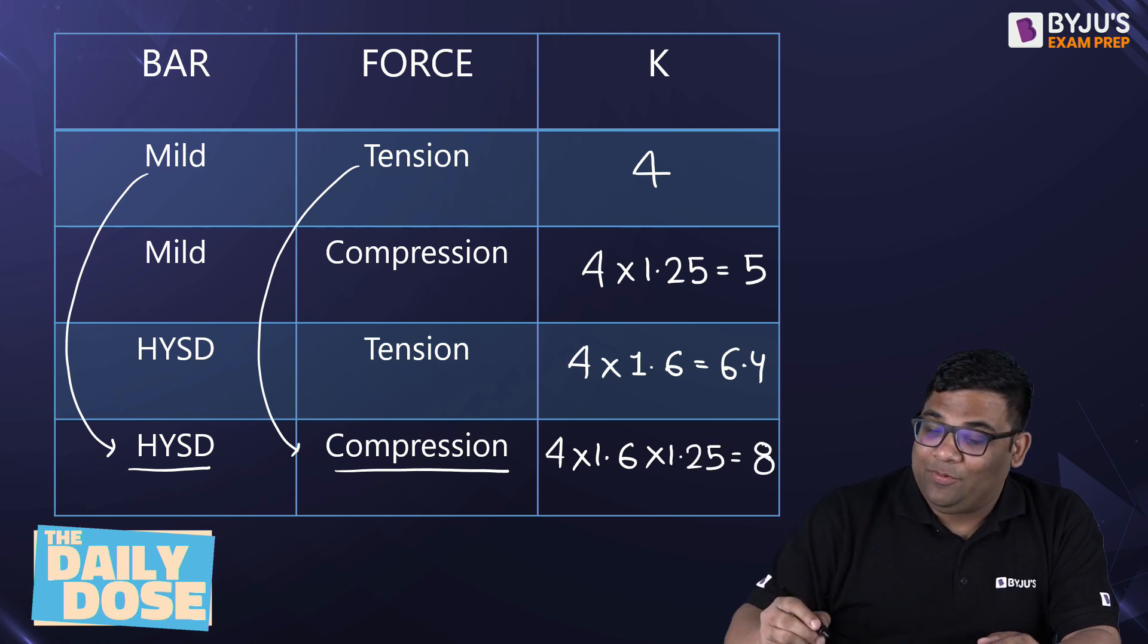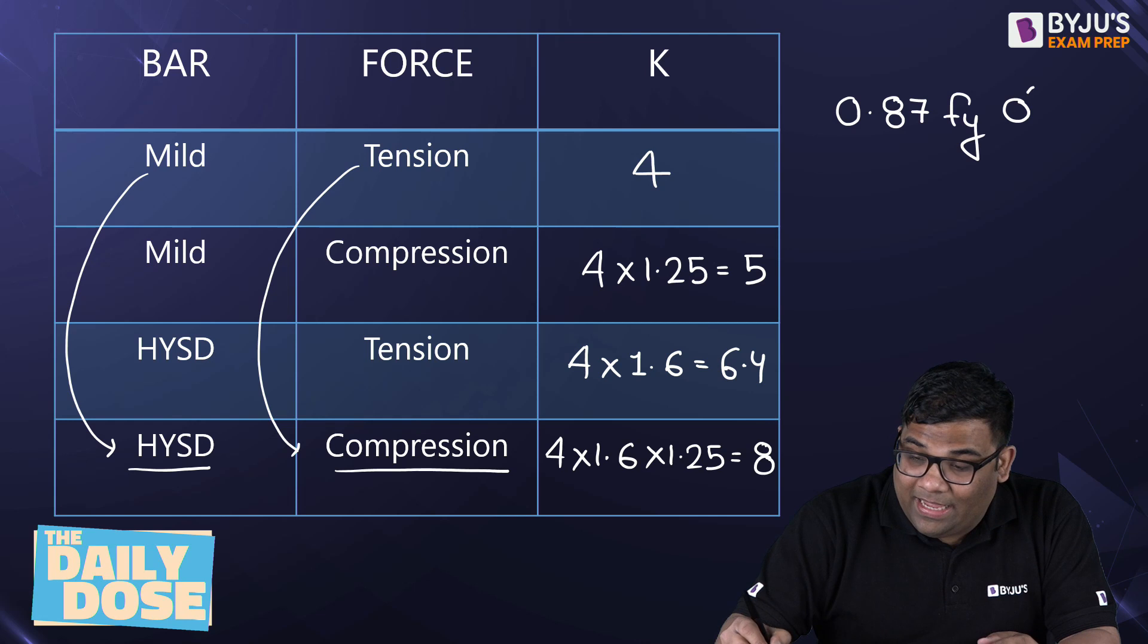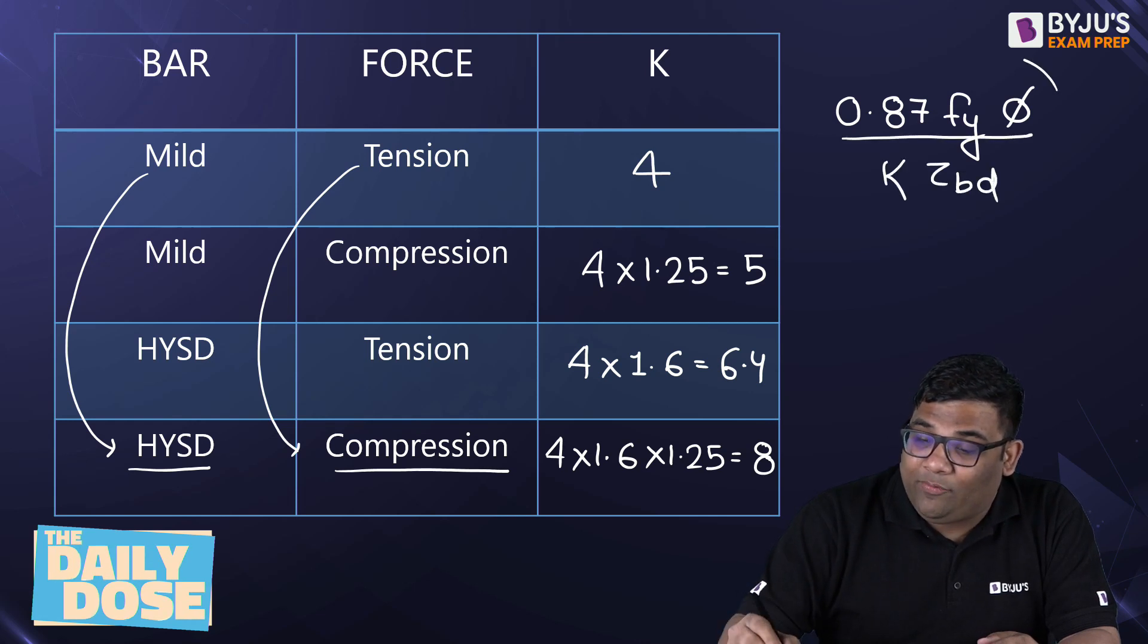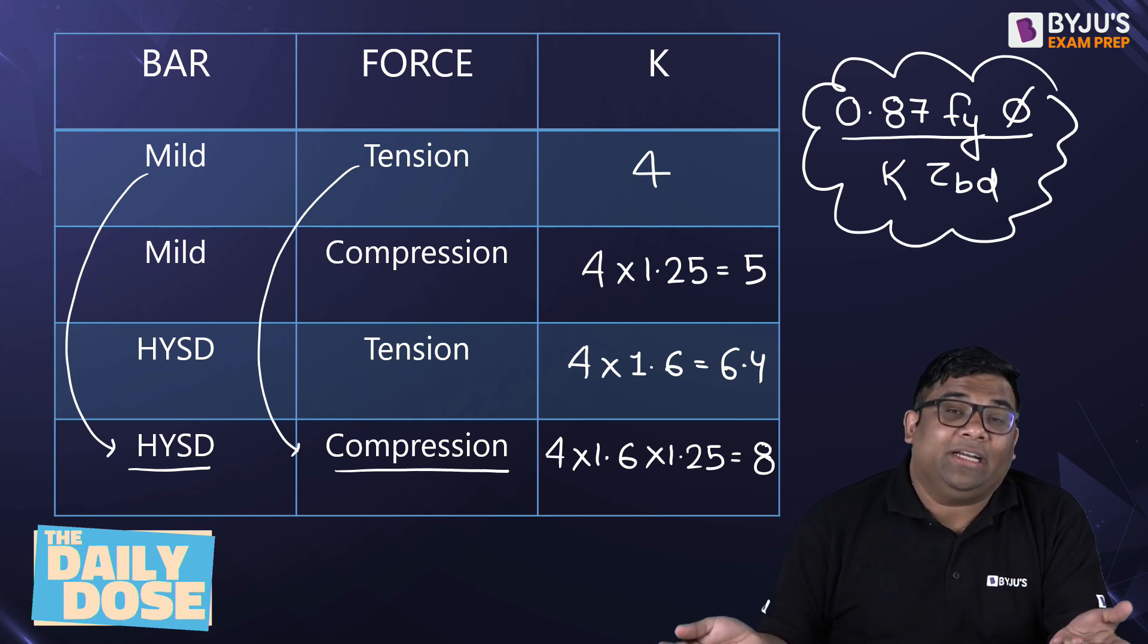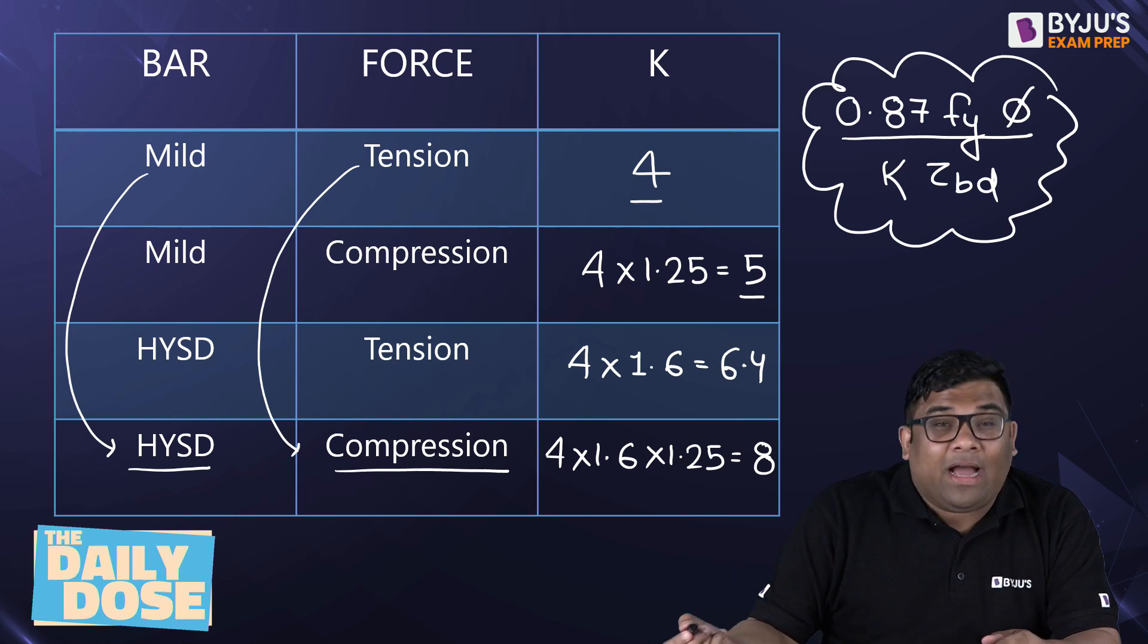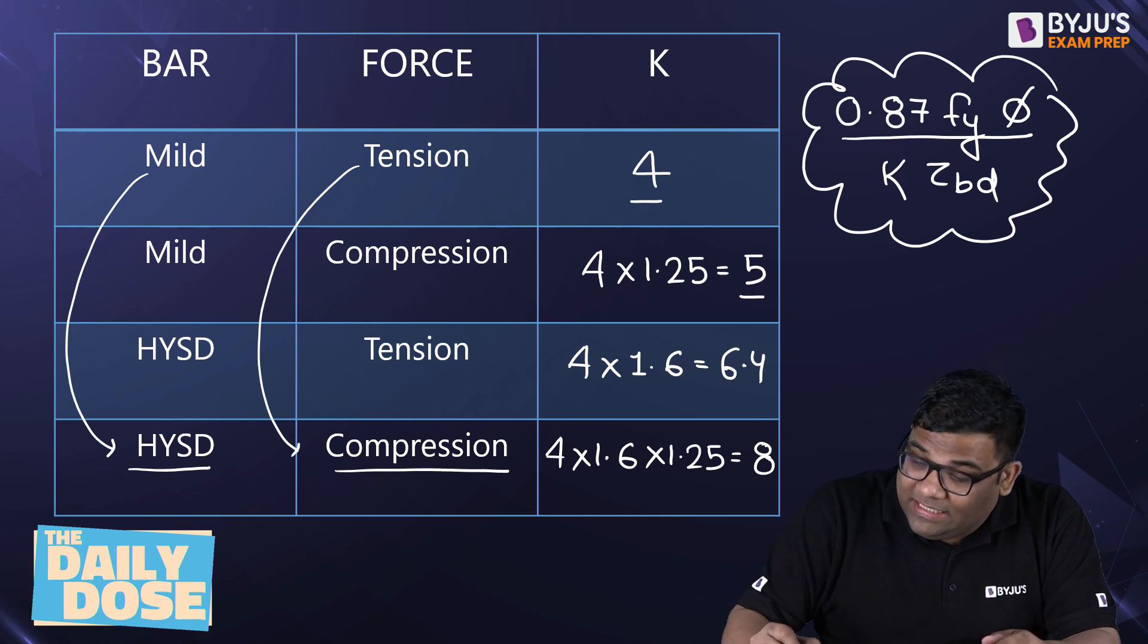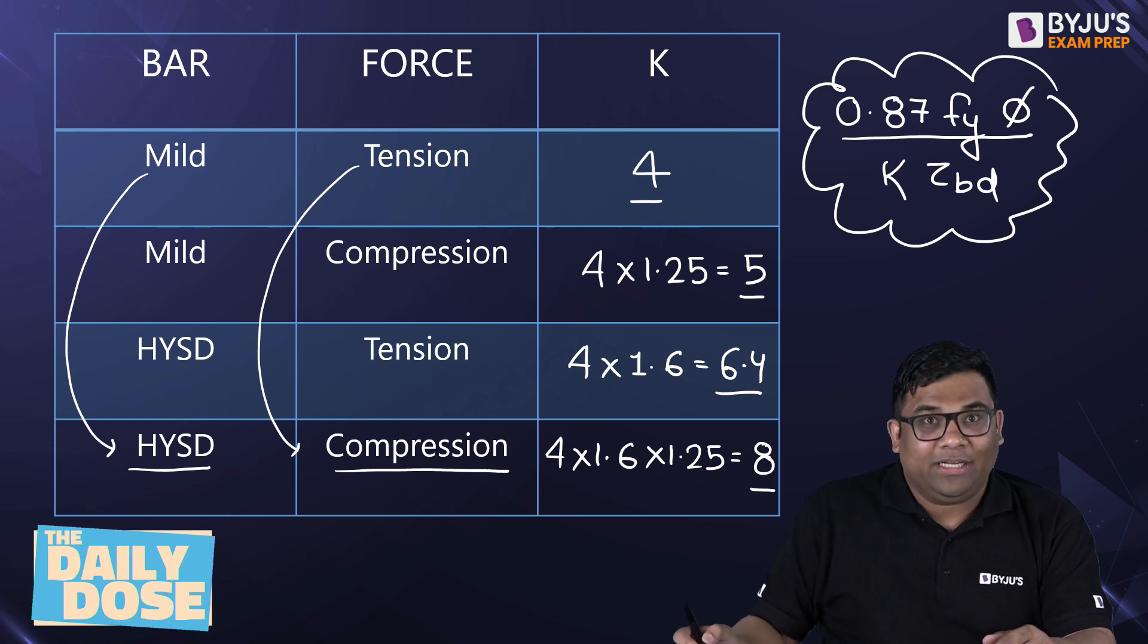So what I will do? I will keep the equation of Ld as 0.87 Fy phi by K tau Bd. Use this same equation for all the conditions, and then vary this K as per the given condition. If it is mild and tension, 4. Mild and compression, 5. HYSD and tension, 6.4, and HYSD and compression, 8. Understood?